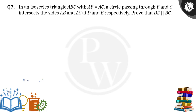Hello everyone. In an isosceles triangle ABC with AB equal to AC, a circle passing through B and C intersects the sides AB and AC at D and E respectively, and DE is parallel to BC.